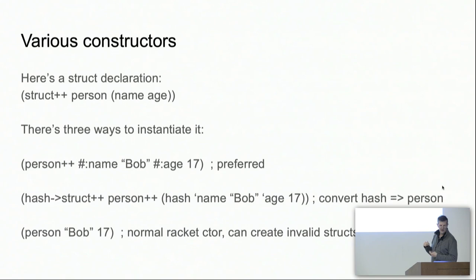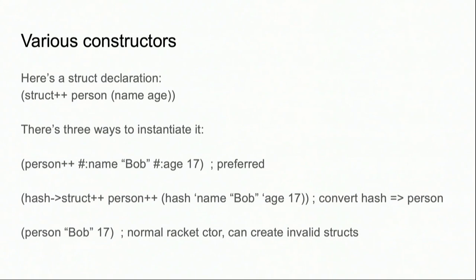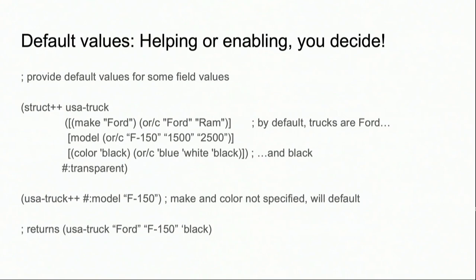You get various constructors. If you declare a person struct with name and age fields, there are three ways to create one: you can use the keyword constructor, which is strongly recommended; you can take a hash and turn it into one of these things using any function that takes keywords; or you can still use the plain Racket constructor. The only problem with that last one is it kind of defeats the whole point — it will end up creating invalid structs if you're not careful.